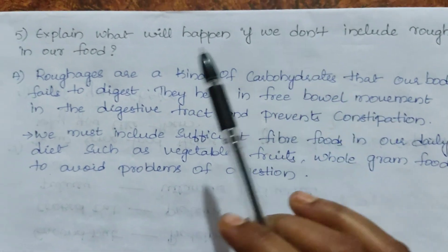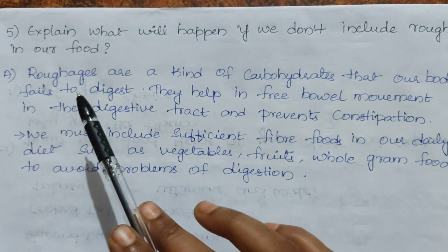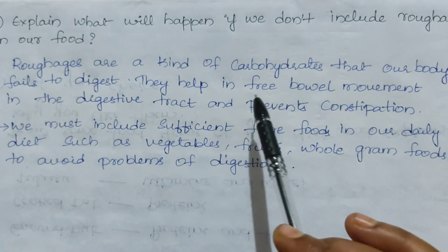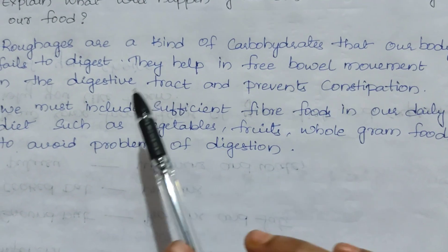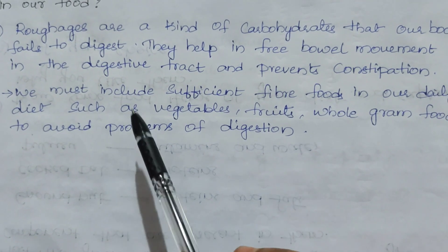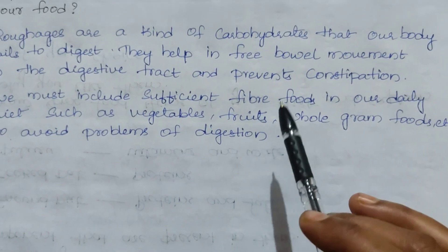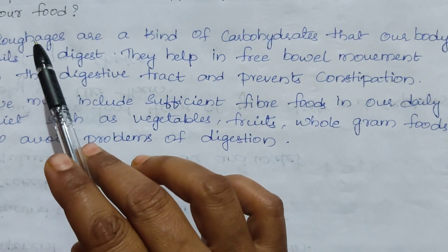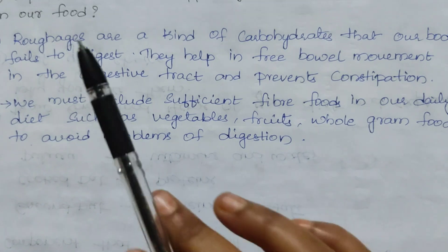The fifth question: explain what will happen if we don't include roughages in our food. Roughages are an important food component; they are a kind of carbohydrate that our body fails to digest. They help in free bowel movement in the digestive tract and prevent constipation. We must include sufficient fiber foods such as vegetables, fruits and whole grain foods in our daily diet to avoid problems of digestion.